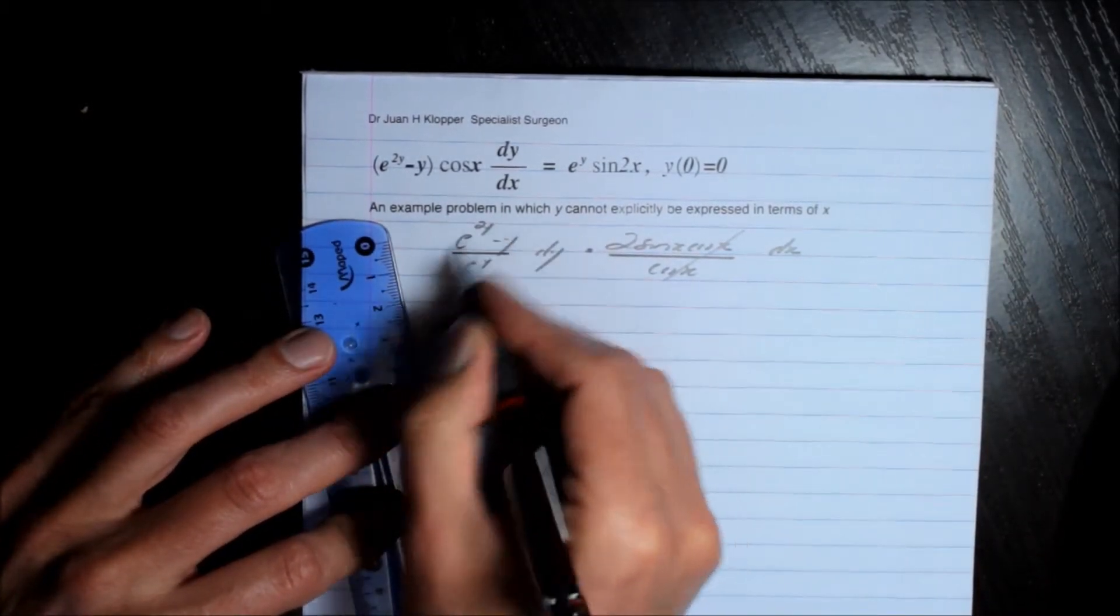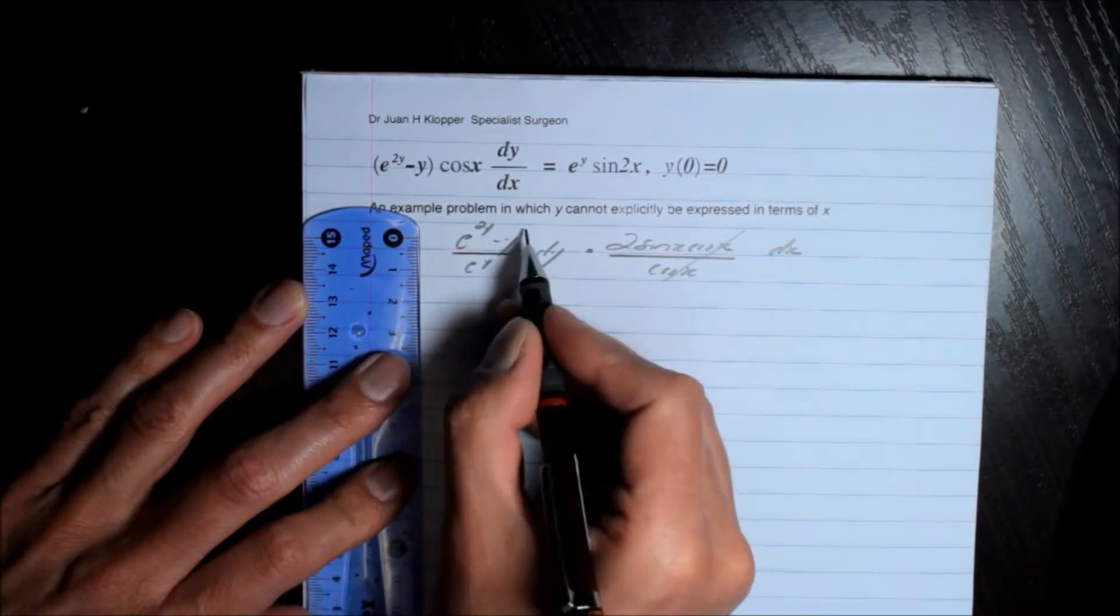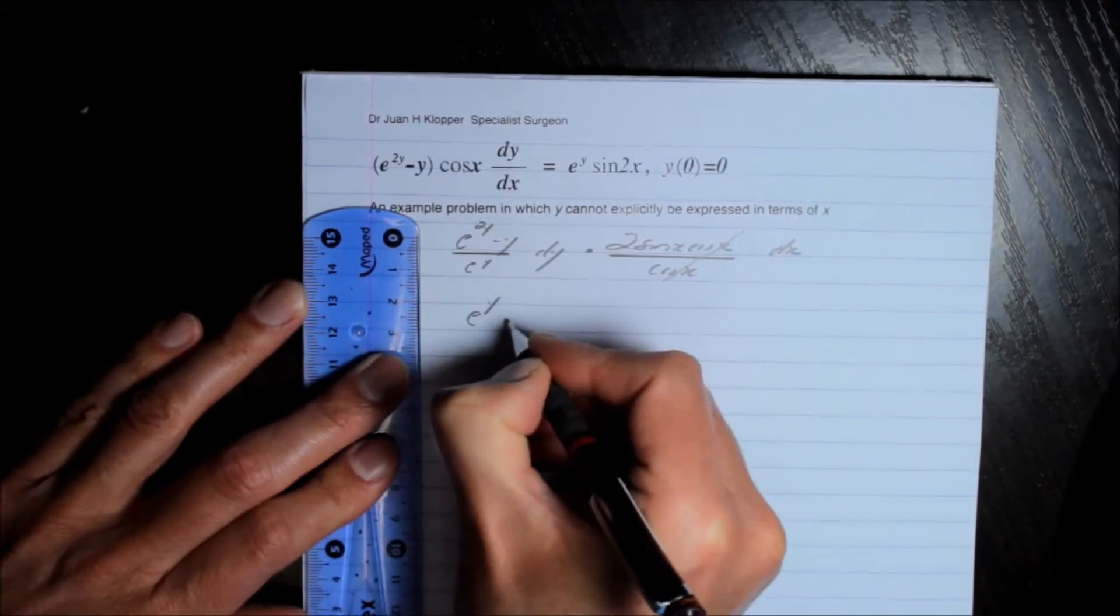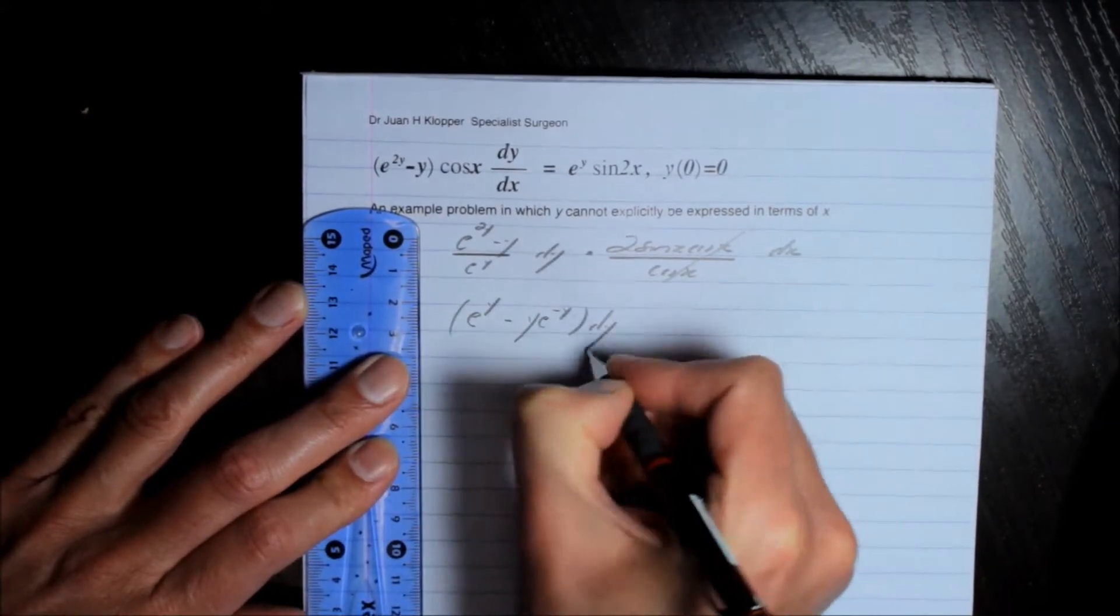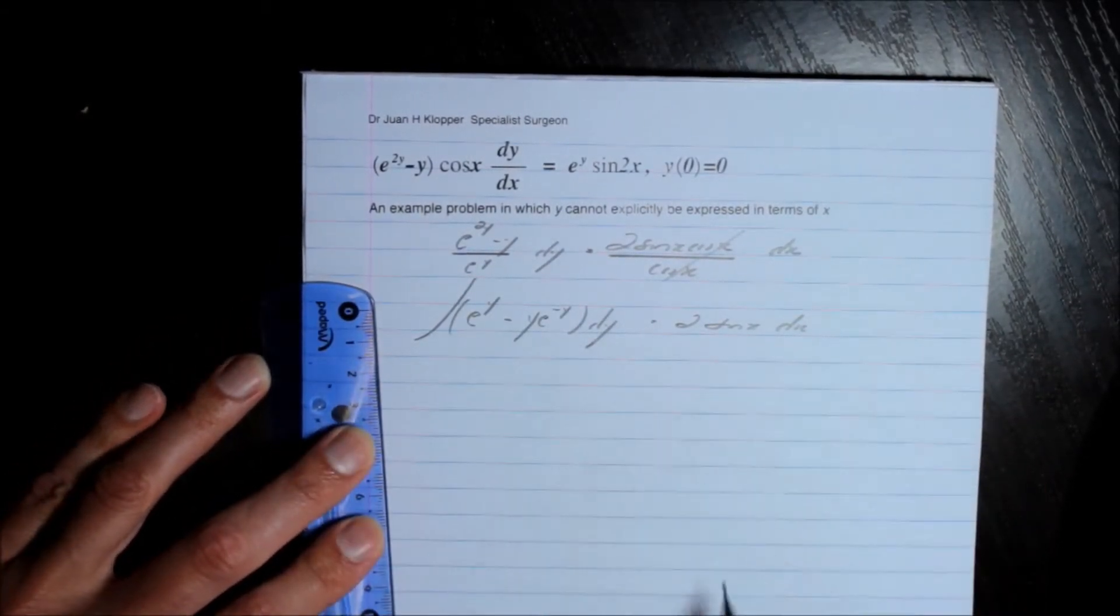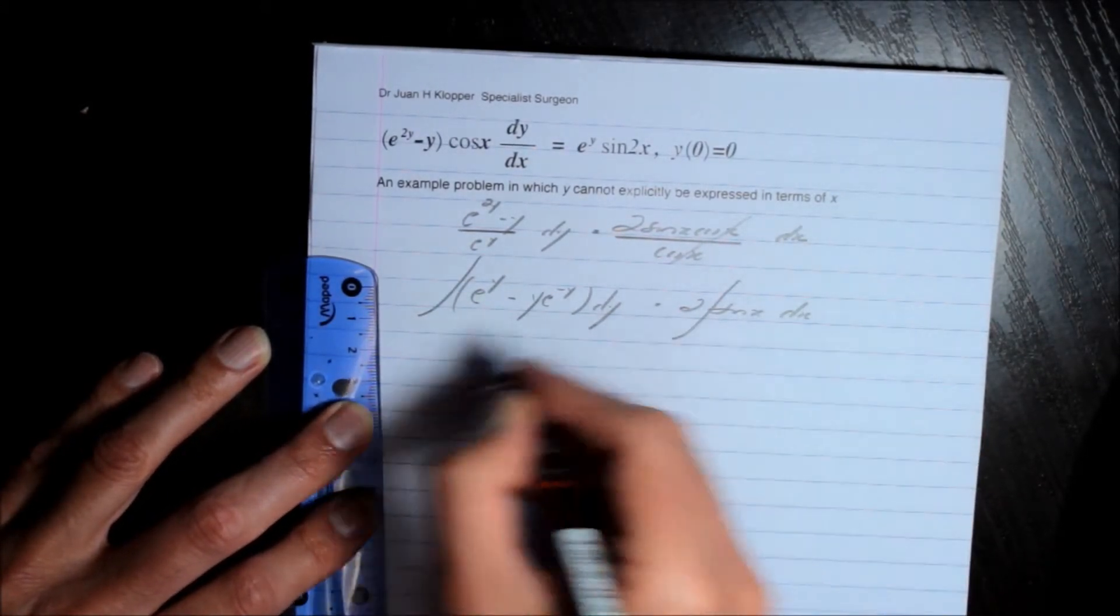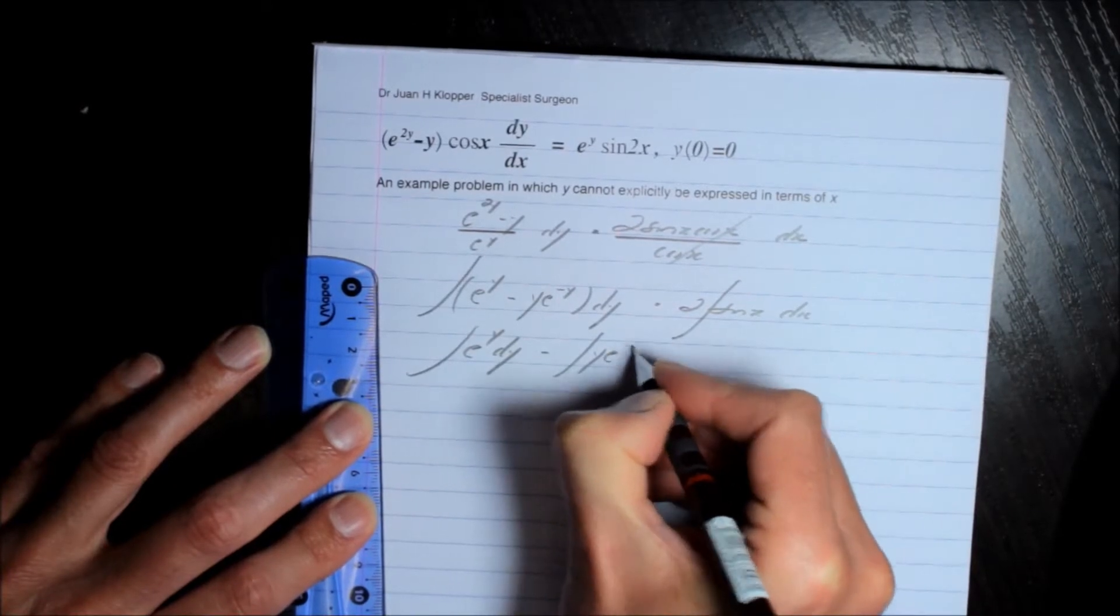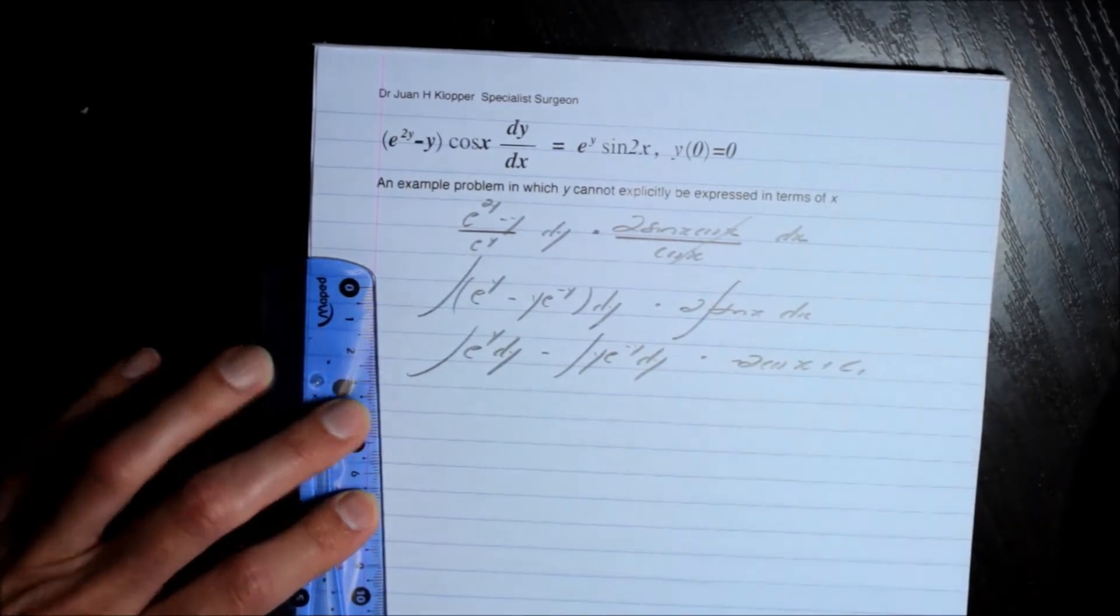Now this would be a difficult integral to do, but I can rewrite this by dividing this denominator into each of the components here of the numerator. That's going to leave me with e^y minus y e^(-y) dy. And that's going to equal -2 times the cosine of x plus some new constant, let's call it c1.